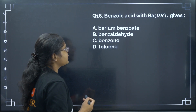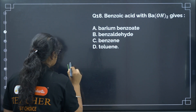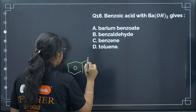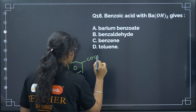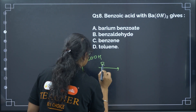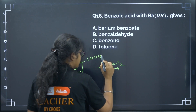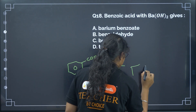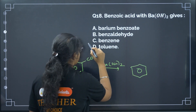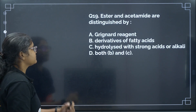Next: benzoic acid with barium hydroxide gives? Benzoic acid in the presence of barium hydroxide undergoes decarboxylation and we get benzene. Correct answer: option C.